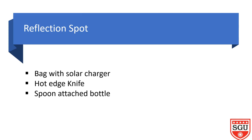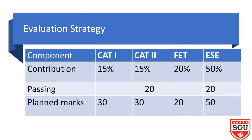As you remember, we have shown the needs we discussed — the solar backpack with solar charger, hot edge knife, and spoon attachment.